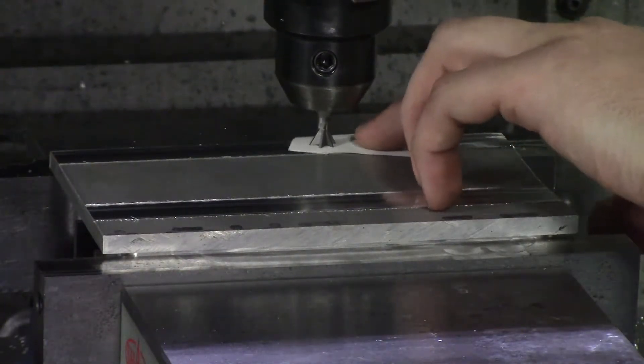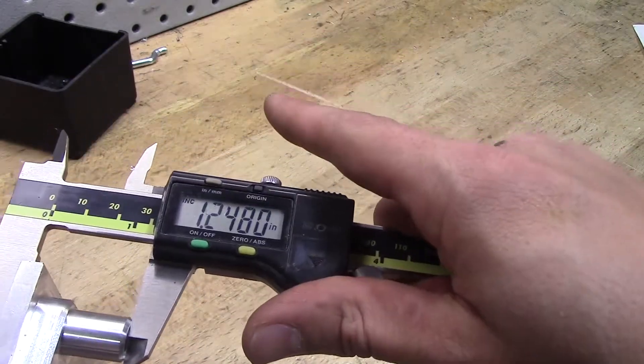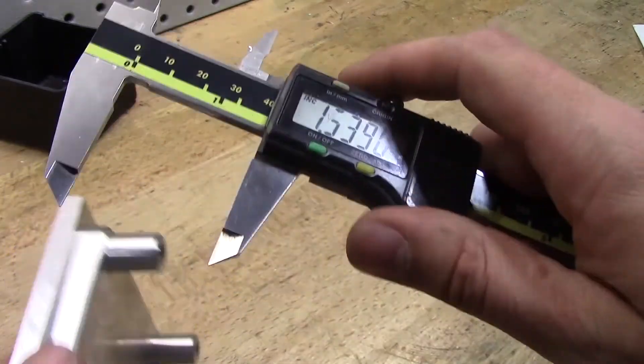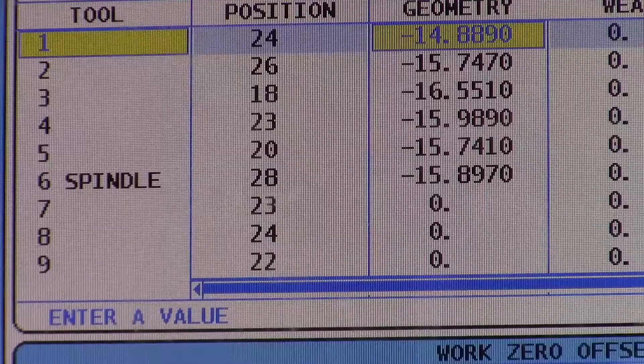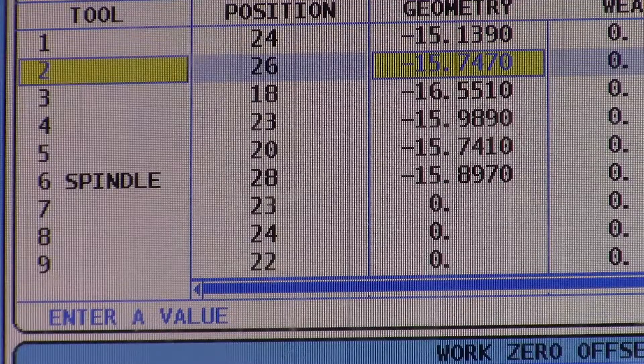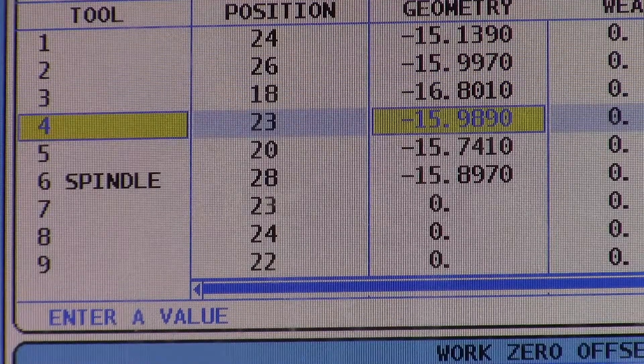Just make sure that you're touching off on the high point. Then what we're going to do is measure the part in a couple different places. As long as it's within four or five thou, you should be fine. We have to take off roughly 250 thou, so I'm going to take the numbers I have and subtract 250 thou.